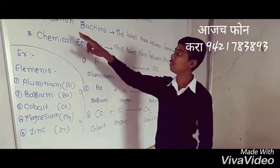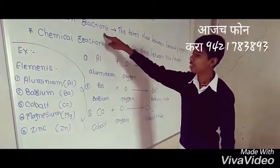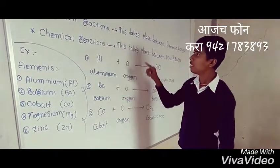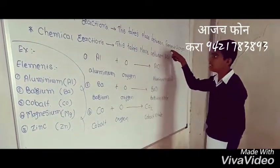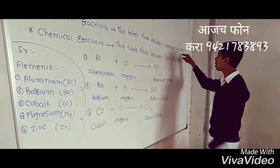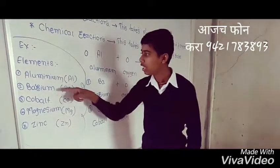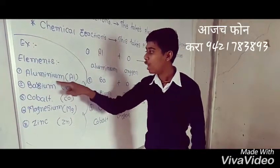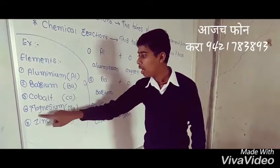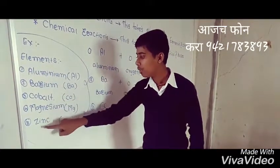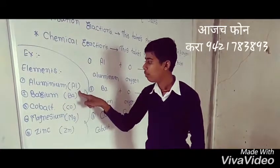So today we will learn oxidation reaction. In oxidation reaction, there is a reaction between elements and oxygen. Here are some elements: aluminum, barium, cobalt, magnesium and zinc. The symbol of aluminum is Al.